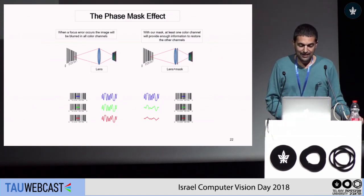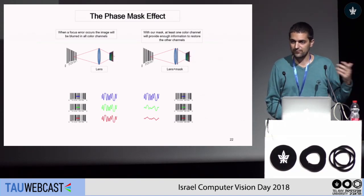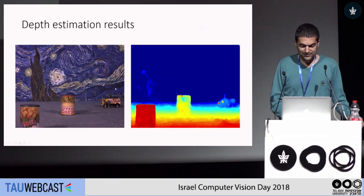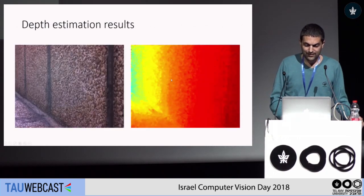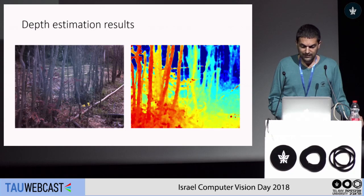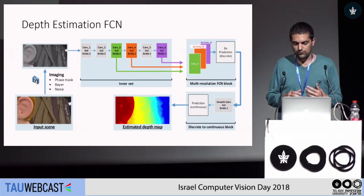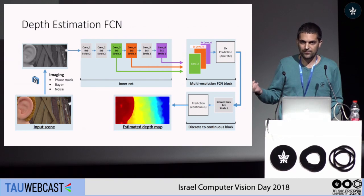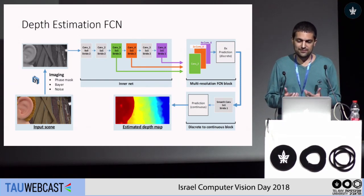Clearly, we have different objects at different depths and it's more complicated, so instead of trying to do it ourselves we let the network do it. The concept behind this phase mask is that it lets each color be at a different focus point, allowing us to understand the depth of each color. This allows us to get depth reconstructions — for example, here we have this object and we get this depth reconstruction. All of them are taken by a camera designed in our lab together with Professor Emmanuel Marom.